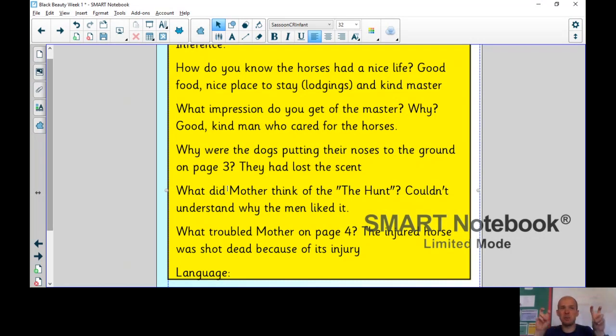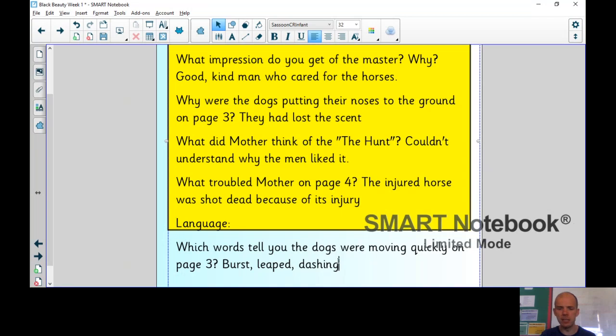What did mother think of the hunt? She couldn't understand why men liked it. And she said this sport in inverted commas, because she doesn't really think it's a sport. And in the text, you can see it says that horses get lost. They tear up the field. So these are not good reasons for them to be doing that. What troubled mother on page four? So one of the horses who fell, unfortunately, was shot dead. So that is something that can happen, children. When they think they wouldn't be able to treat a horse, then to stop them from feeling the pain, they will actually kill the horse so that it no longer feels that pain. So it's quite a sad thing there. And finally, there was a quick language question. Which words tell you that the dogs were moving quickly on page three? Well, it was those words like burst and leaped and dashing, these nice verbs, powerful verbs that give you that impression of a rushed situation.